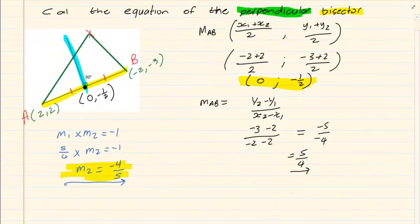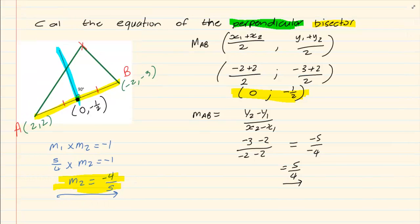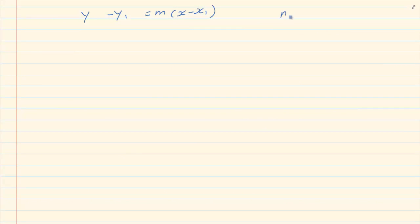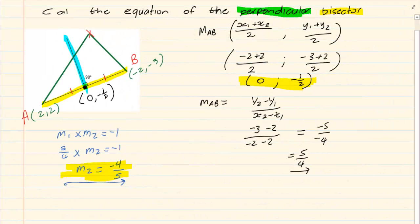m is minus 4 over 5. Now be careful remember it is the one you recalculated, minus 4 over 5 and the point is 0 and minus a half. That you have also calculated as a midpoint.